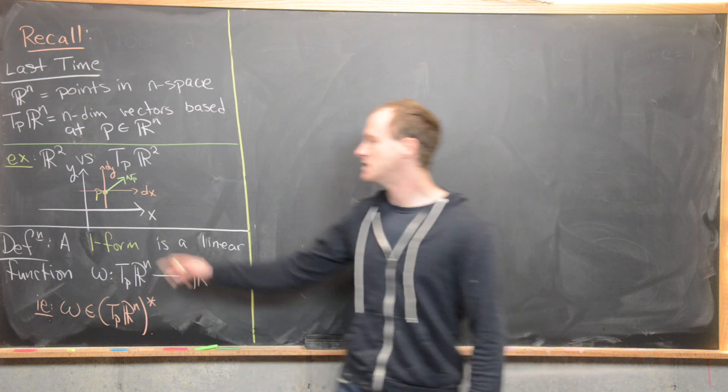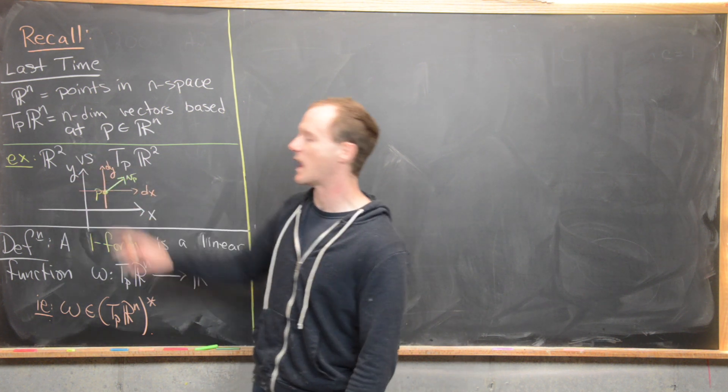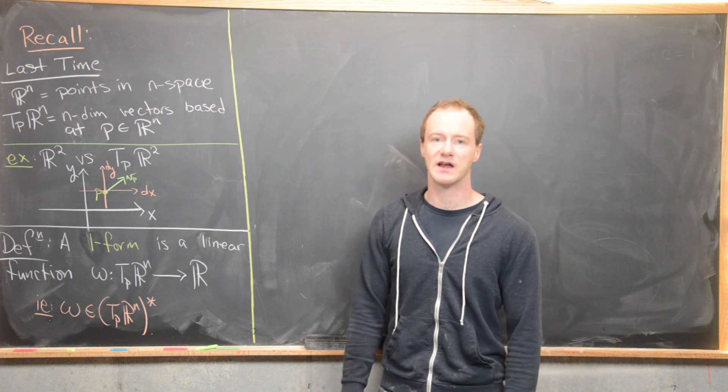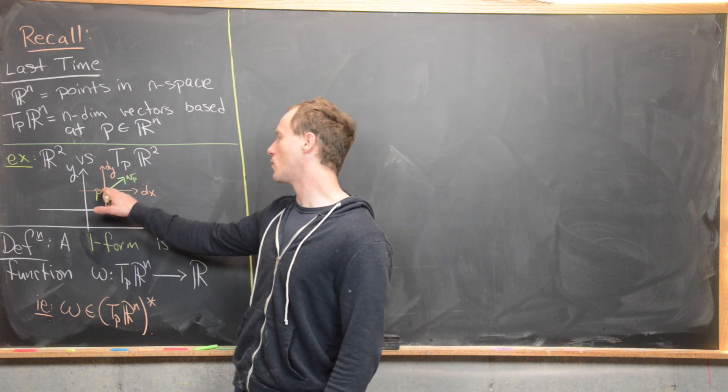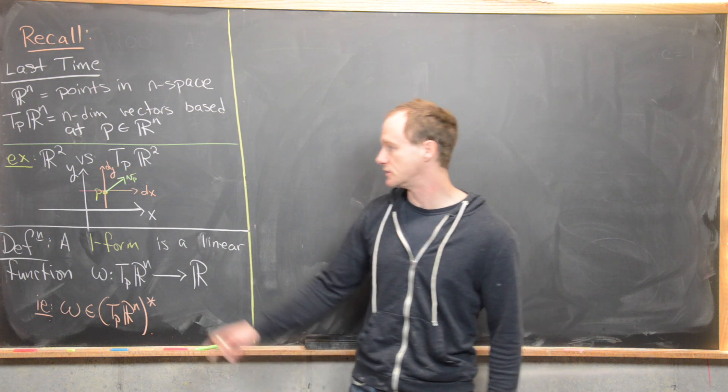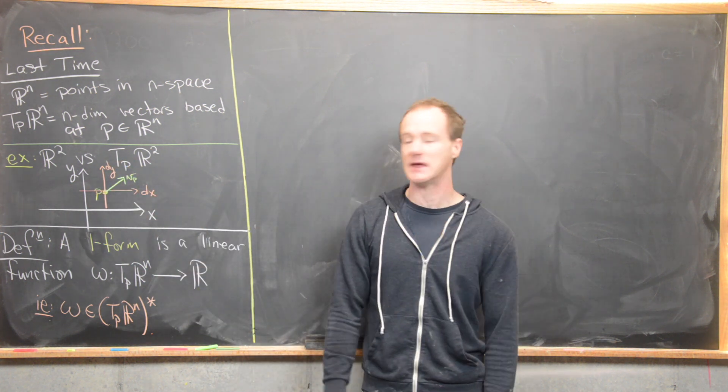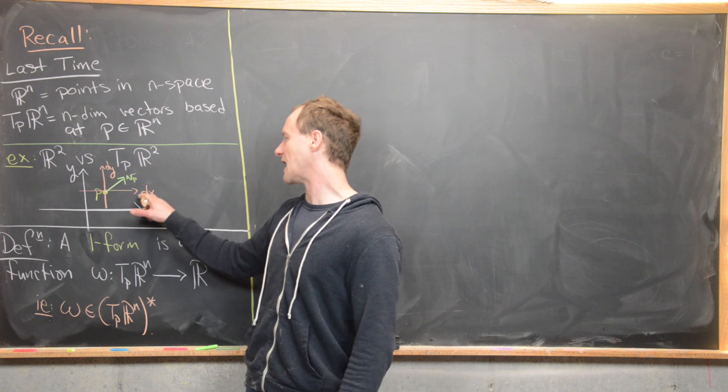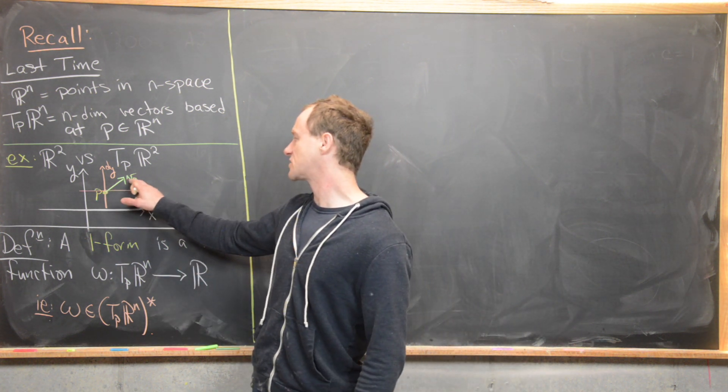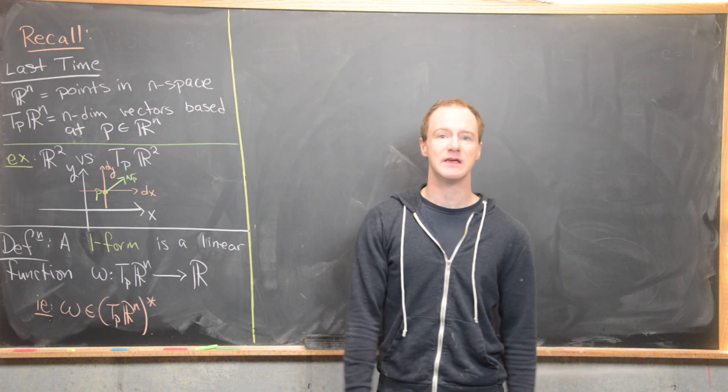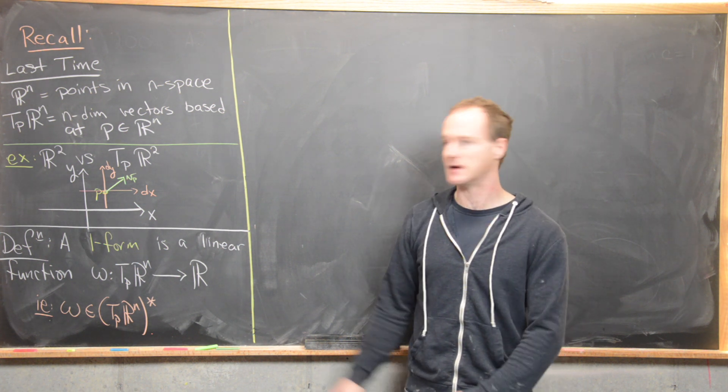So I've drawn a little picture here. R^2 versus T_p R^2. So R^2 is just this plane. Notice I've got the x-axis and the y-axis. Generally we'll take x and y to be these coordinate functions that project to these axes. Then what we have here is this point p, which I've put in yellow in R^2. I pick a new coordinate system at that point p, and that new coordinate system has axes that are orthogonal to each other, dx and dy. Then this vector v_p is inside T_p R^2, and it's a vector that is based at p and pointing up in this direction.